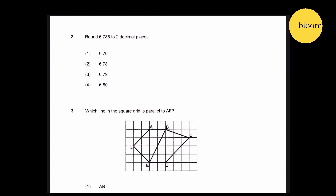Question 2: Round 6.785 to 2 decimal places. Two decimal places is this position. The digit is more than or equal to 5, so that makes 8 round up to 9. Therefore, 6.79 is the answer.